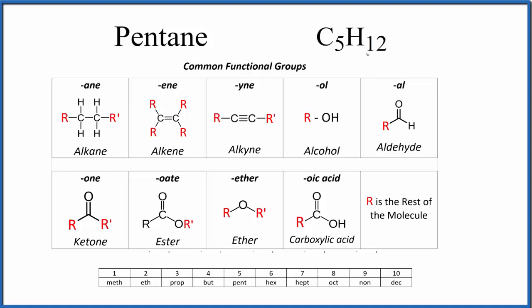So when we draw Lewis structures, we first need to count the valence electrons. Carbon is in group 14, sometimes called 4A, so it has four valence electrons. Five carbons, so we multiply by five.